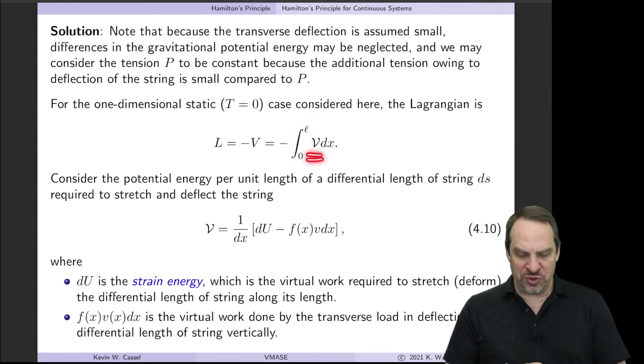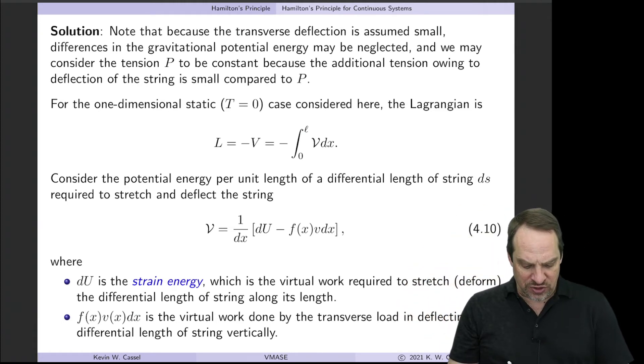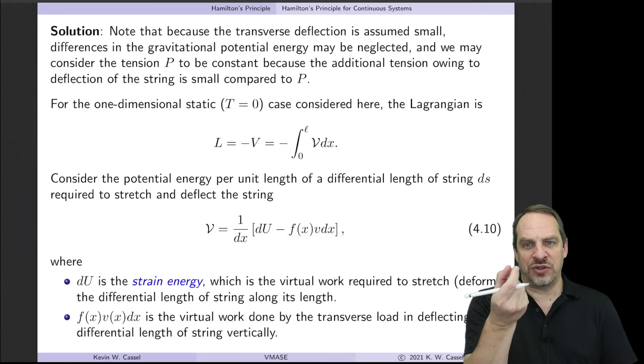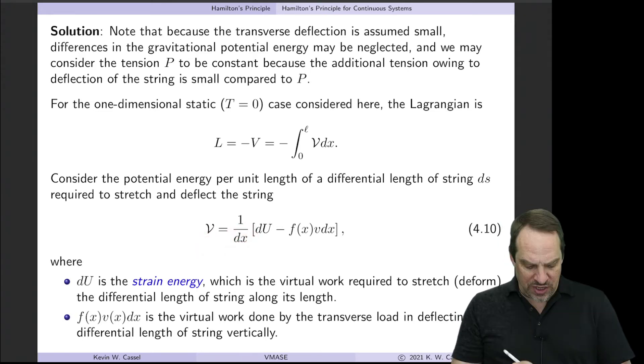Now, what are the contributors to the potential energy? Well, one is we are stretching the string because of the tensile force, P. So that's a strain energy, U. Because we're just looking at little infinitesimal pieces, that'll be a small dU. Then there's also a force times a distance, the work done by the lateral load, F of X, acting on each portion of the string. So F times V, and then times dX. So force times distance for each little dX piece of our string. And then that's per unit length to get our script V. So we divide by dX. And the minus sign here is simply because it's down in the negative direction.